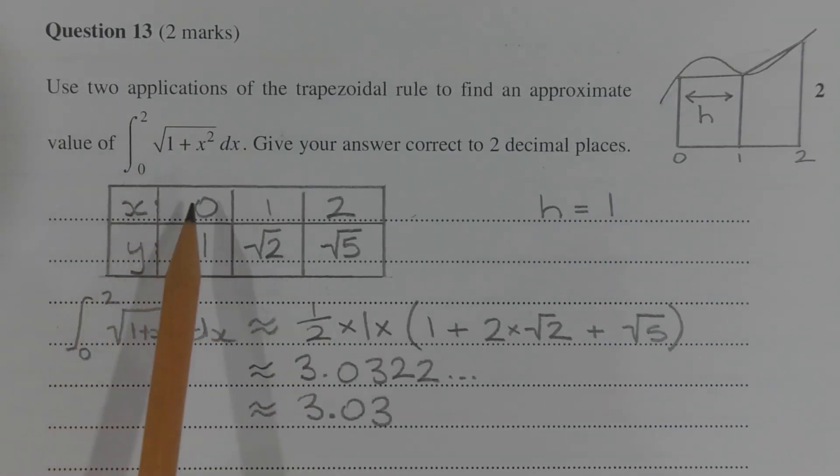When x equals 0, y is equal to the square root of 1 plus 0 squared, which equals 1. When x equals 1, the square root of 1 plus 1 squared is equal to the square root of 2. And when x equals 2, the square root of 1 plus 2 squared is equal to the square root of 5.